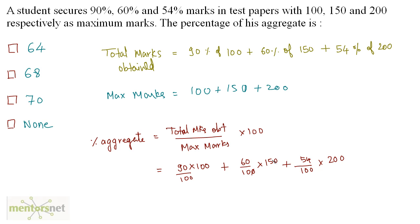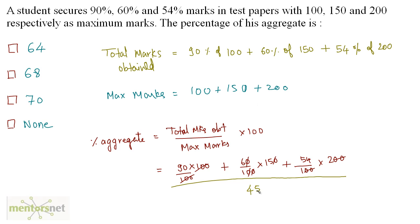Simplifying, the zeros cancel out in each term. We divide by the total maximum marks of 100 plus 150 plus 200, which equals 450. Calculating all the terms gives 64%. So 64% are the student's aggregate marks.